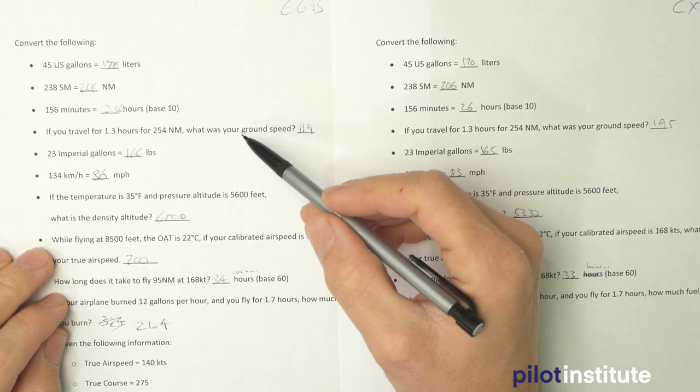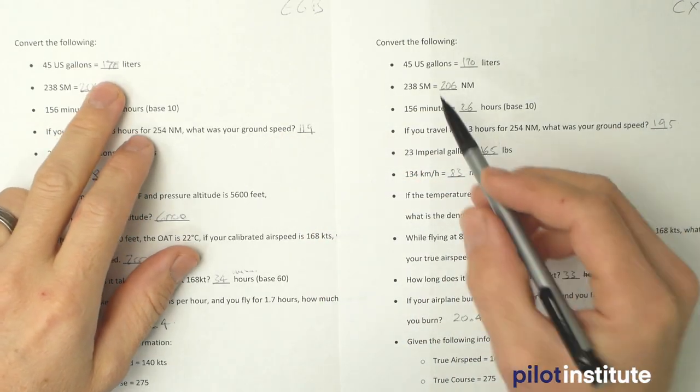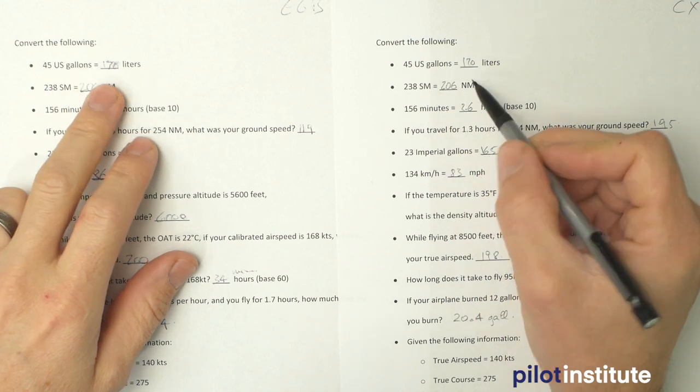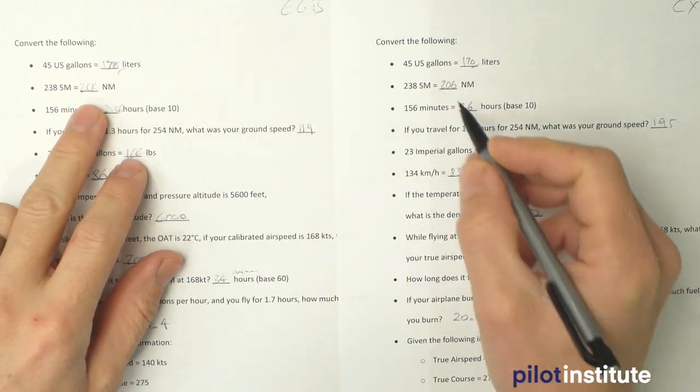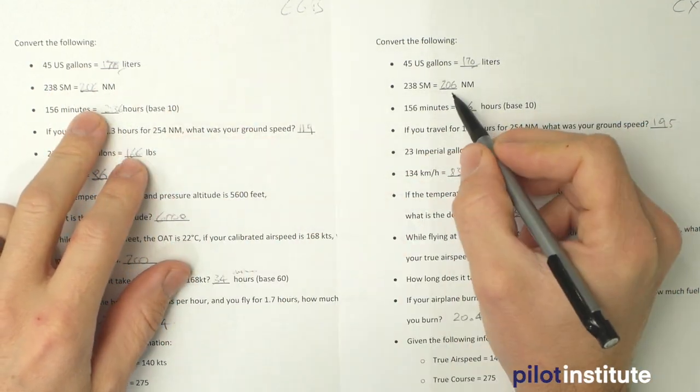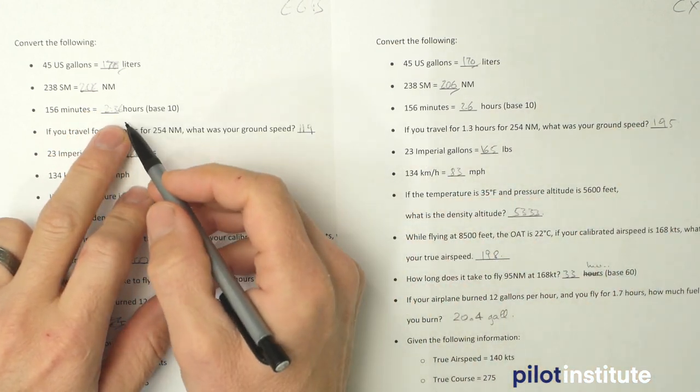So what I got on the left is the E6B, and on the right I've got the CX-3. So I'm just going to go through each other. 45 US gallons, 170 liters, it's all good. 238 statute miles is 206 nautical miles, that was good. And then in here,